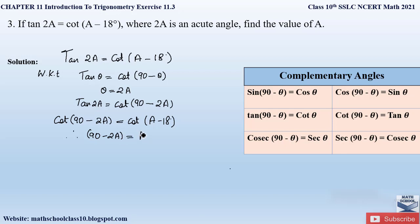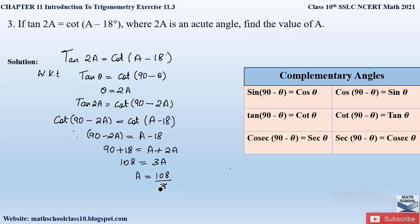Since both sides have cot, we equate the arguments: 90 − 2A = A − 18. Bringing −2A to the right and +18 to the left: 90 + 18 = A + 2A, so 108° = 3A. Therefore A = 108 ÷ 3, which gives A = 36 degrees. Wait — let me restate: 90 + 18 = 108, and 108 ÷ 3 = 36, so A = 36 degrees.